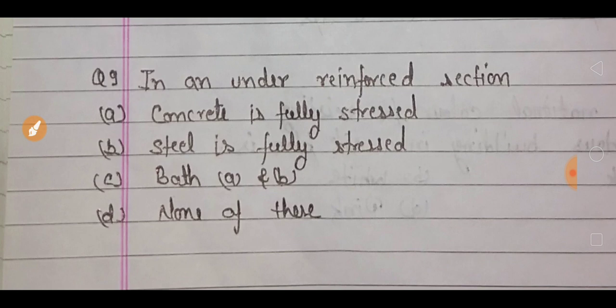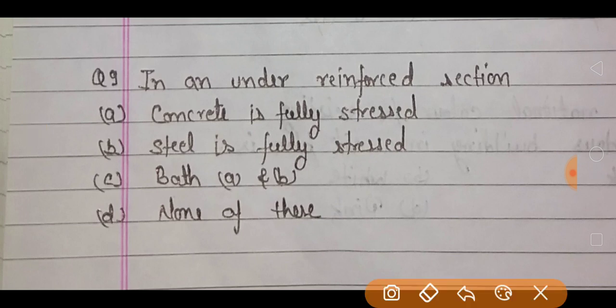Next question: in an under reinforced section. Under reinforced section क्या होता है? Under reinforced section वो होता है जिसमें steel fully stressed होता है. We are using under reinforced section to design because when the steel is fully stressed, we get a ductile failure.